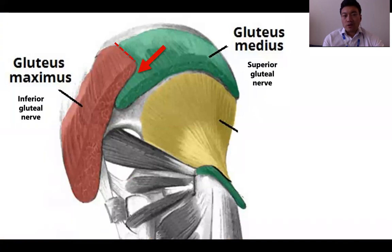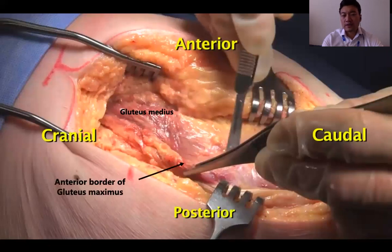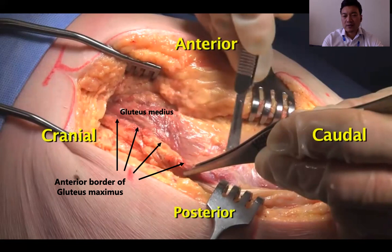Why is this important? You want to develop the plane between gluteus maximus and gluteus medius, which is a true internervous plane, making it so extensile. These two muscles are supplied by different nerves. This image demonstrates the forceps holding the anterior border of gluteus maximus, and you can then use a knife to carefully dissect out that plane between gluteus maximus and gluteus medius all the way up to the iliac crest.